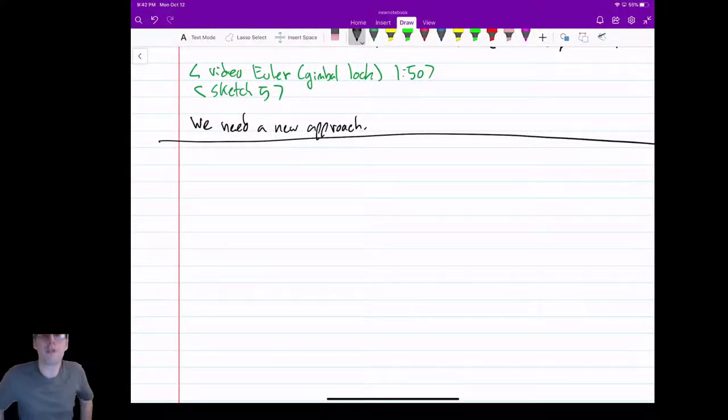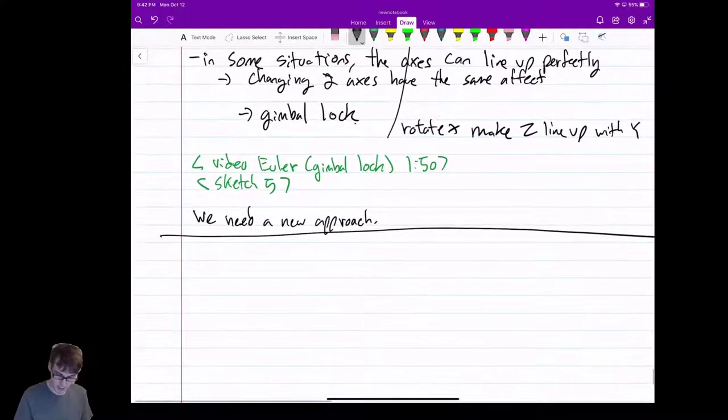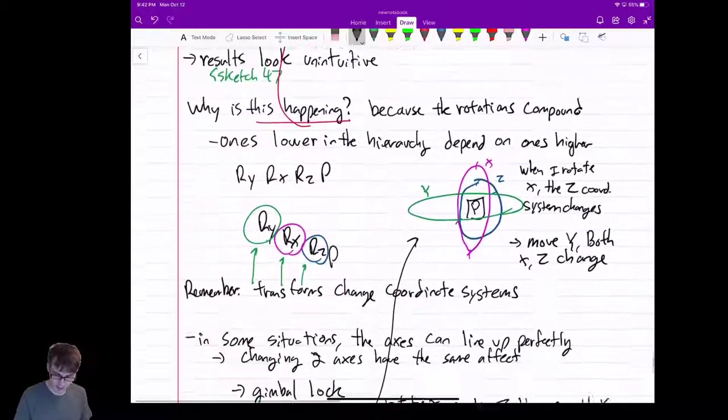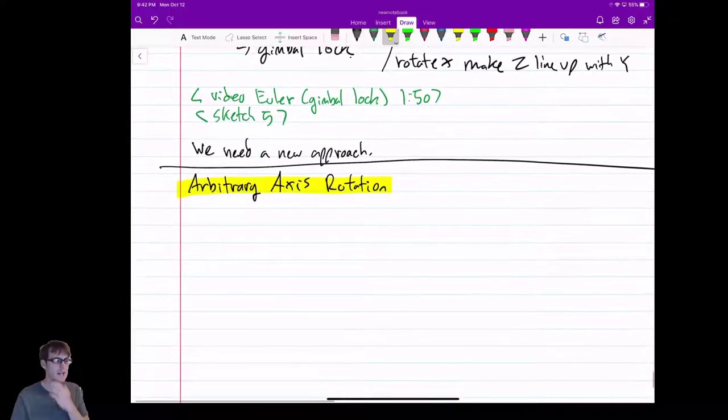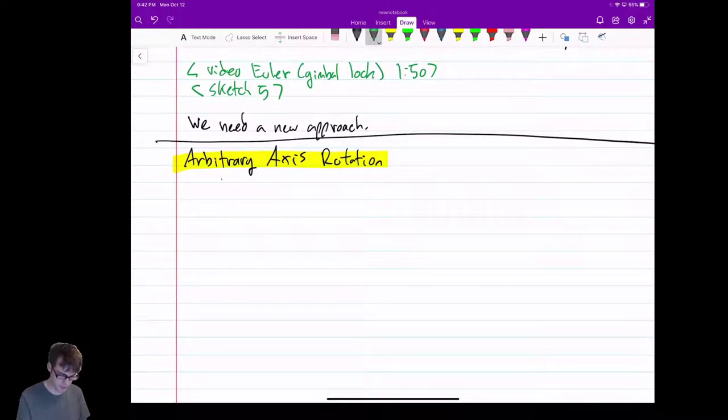There must be a better way to do rotation than those Euler or Angle rotations. So what we want to learn about is what's called arbitrary axis rotation. It's exactly like it sounds like. I want to be able to take an object and rotate it around whatever axis I want. Imagine I have 3D space here, and I have some vector out in space, and I'll call this my axis.